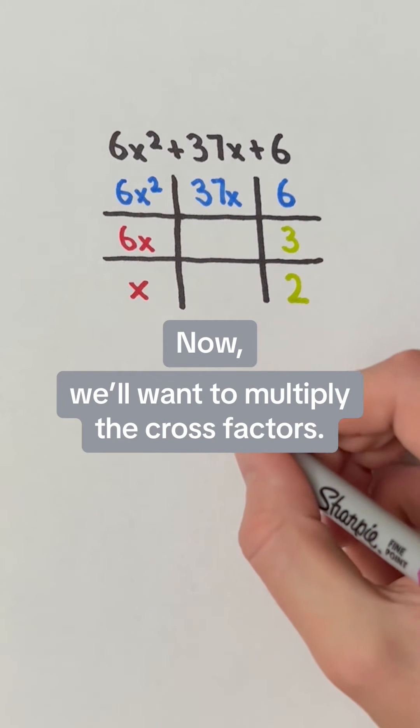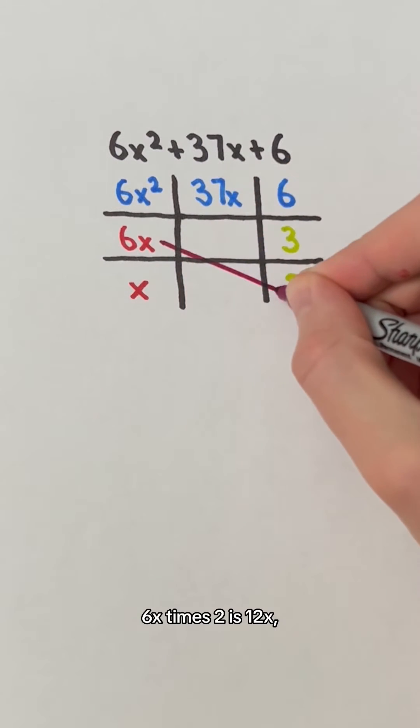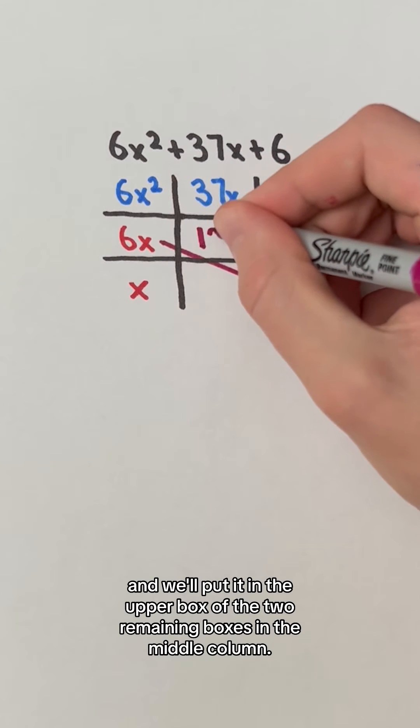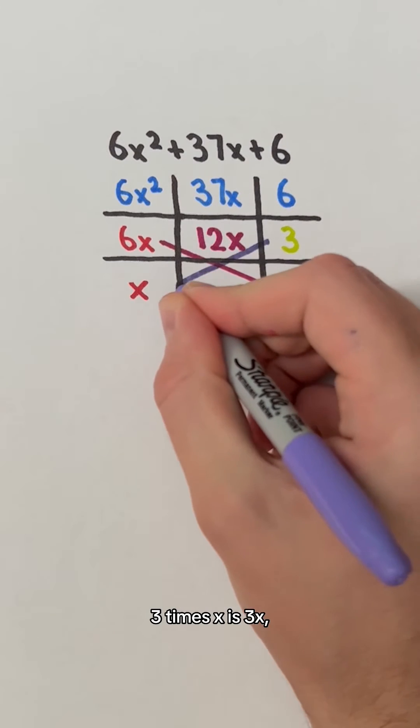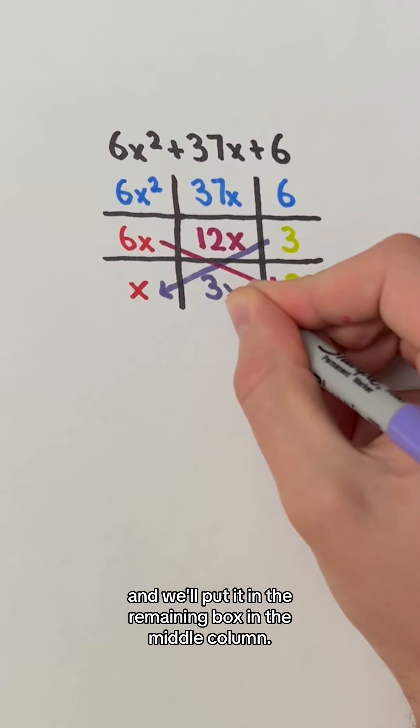Now, we want to multiply the cross factors. 6x times 2 is 12x, and we'll put it in the upper box of the two remaining boxes in the middle column. 3 times x is 3x, and we'll put it in the remaining box in the middle column.